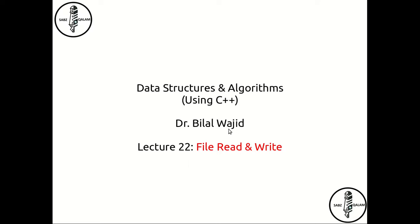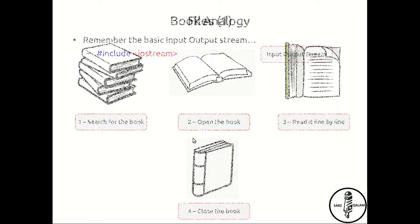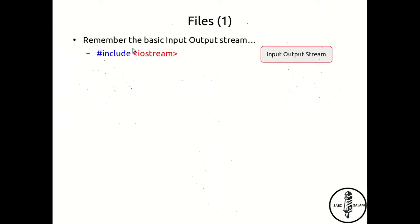It's worthwhile to look at the book analogy. Whenever you want to read a particular book, you search for it, once you've found it you open it, you read it line by line, and when you're done you close the book. Now remember the input/output stream that we've been using constantly, where cout is used to print on the screen and cin is used to take input from the keyboard.